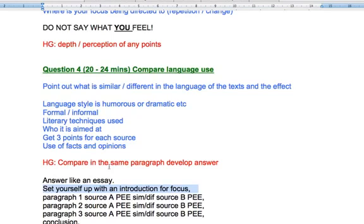So for example, paragraph one might be a comparison of language style, paragraph two might be a comparison of literary techniques, paragraph three might be a list of facts and opinions. So A, B, A, B, A, B.